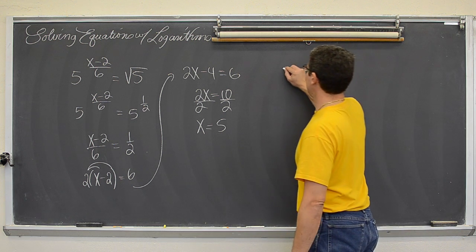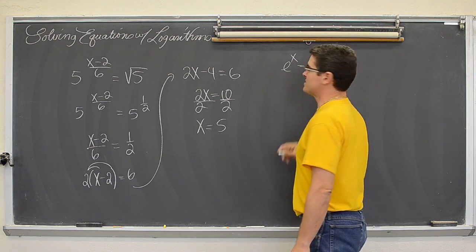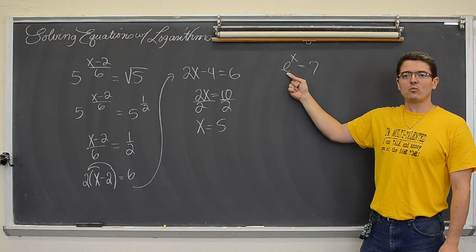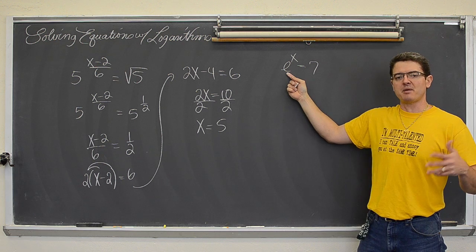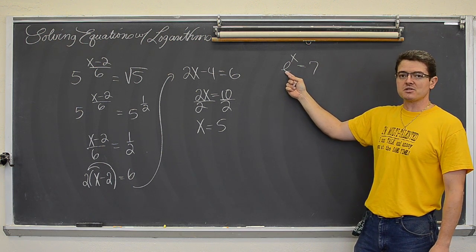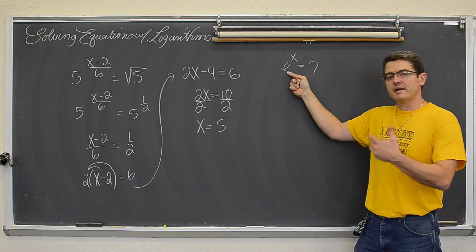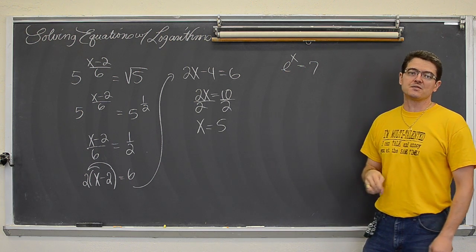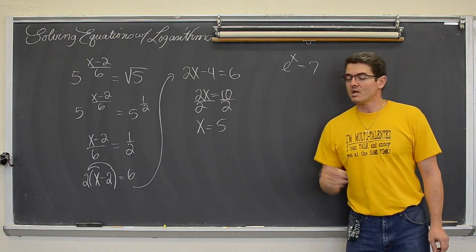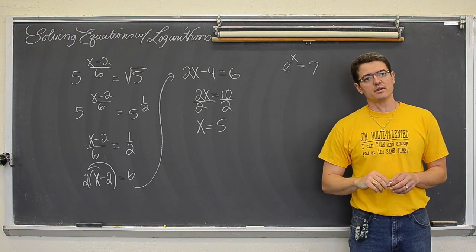Now another equation that will require the use of logarithms is this one. e is base 2.718, it is like pi, it runs on forever. So e has got a base, or e is, excuse me, 2.718. So this base is 2.7... over here you have a base of 7. So we are not going to get both sides of this equation to have the same base, so we are going to require logarithms.